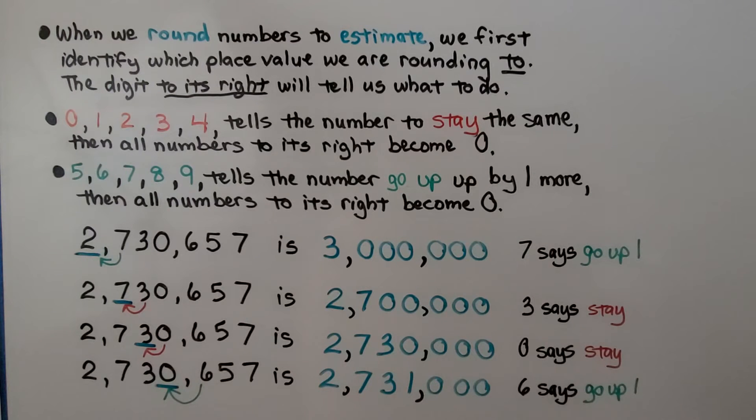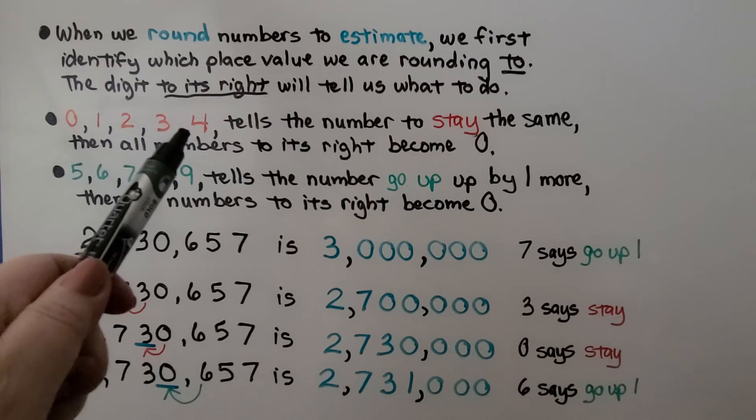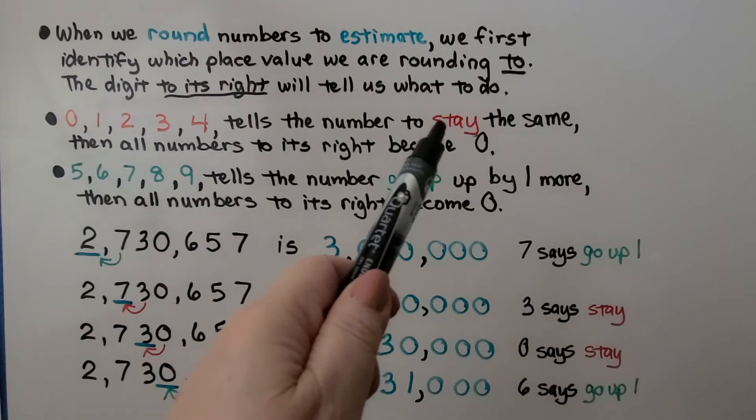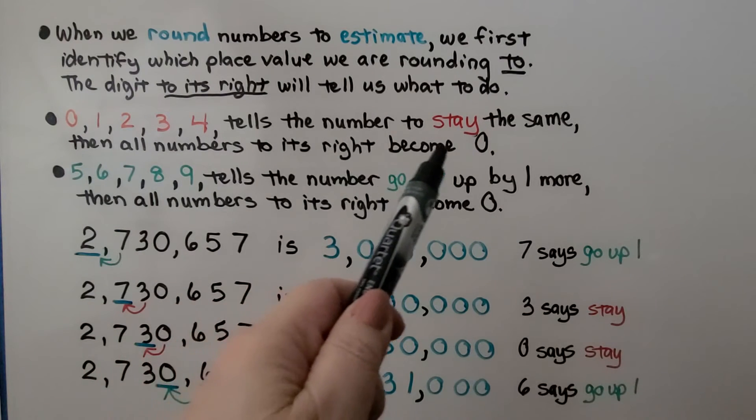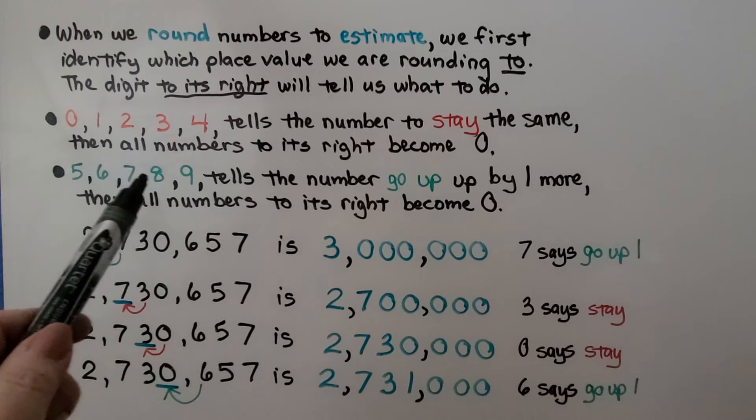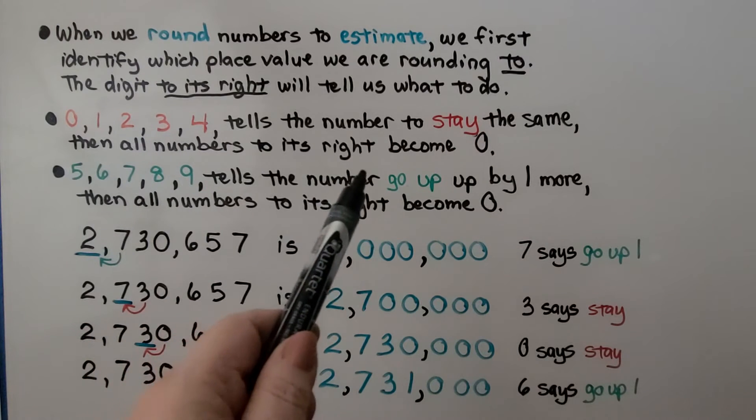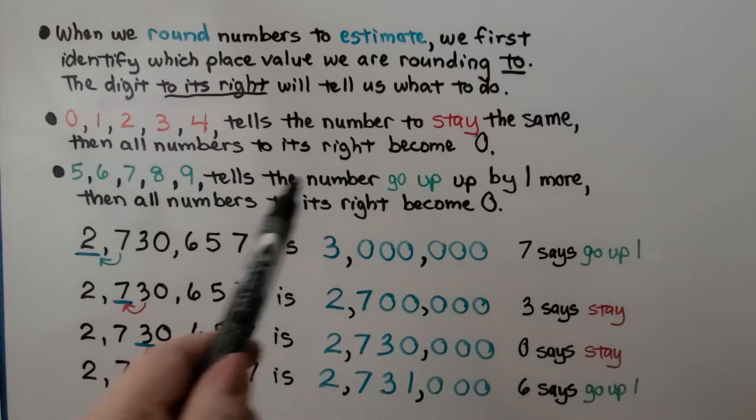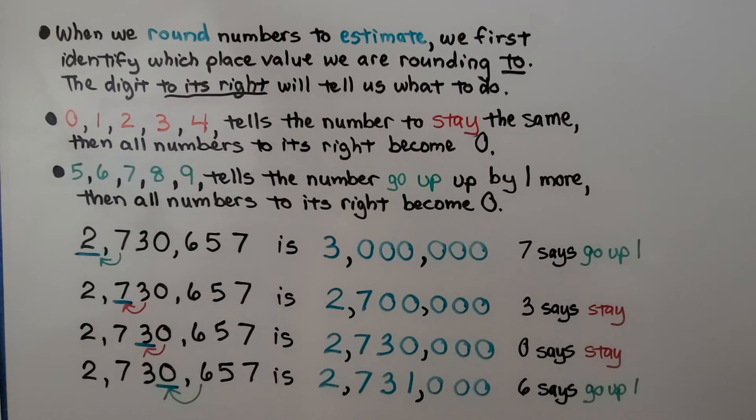When we round numbers to estimate, we first identify which place value we're rounding to. And the digit to its right will tell us what to do. If the digit to the right is 0, 1, 2, 3, or 4, it's going to tell the number to stay the same. Then all the numbers to its right become 0. And if the number to its right is a 5, 6, 7, 8, or 9, it's going to tell the number to go up by 1 more. Then all the numbers to its right become 0.